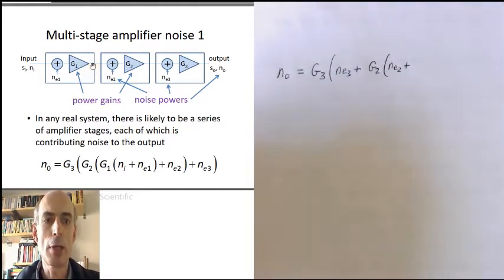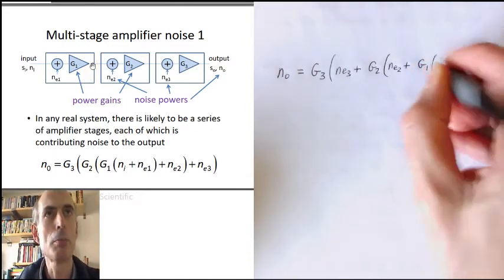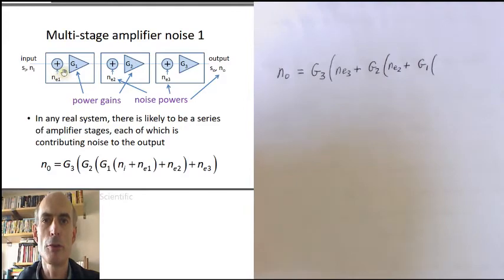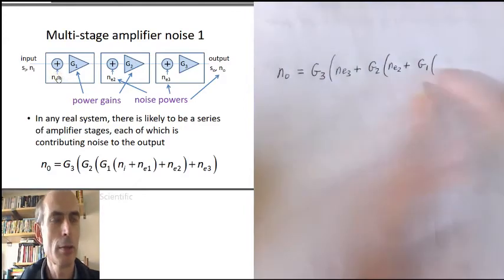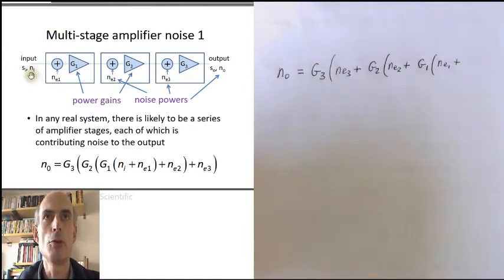And the noise that comes out of the first stage is the gain of the first stage multiplied by the input noise to the first stage, which is the equivalent input noise to the first stage, plus the input noise to the system.